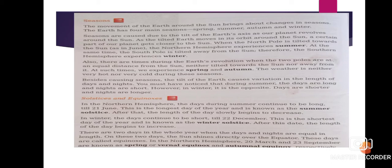To recap: the longest day is known as the summer solstice, the shortest day is known as the winter solstice, and there are two days which have equal day and night — they are known as the vernal equinox and autumnal equinox, occurring on 20th March and 23rd September. This is all about rotation and revolution of Earth and the effects produced by these movements.